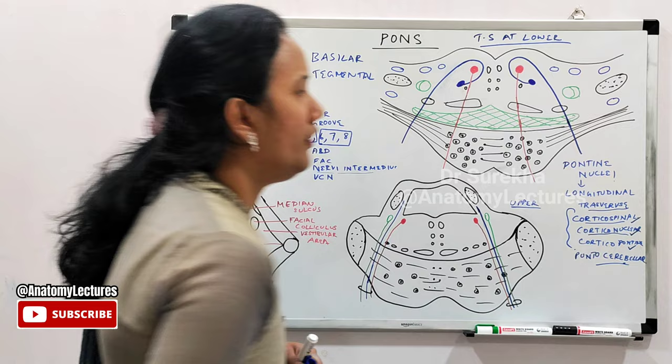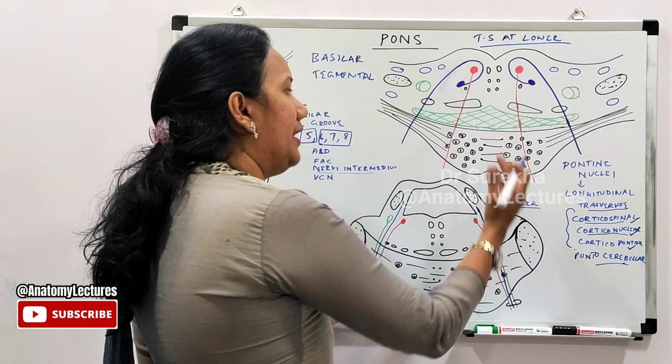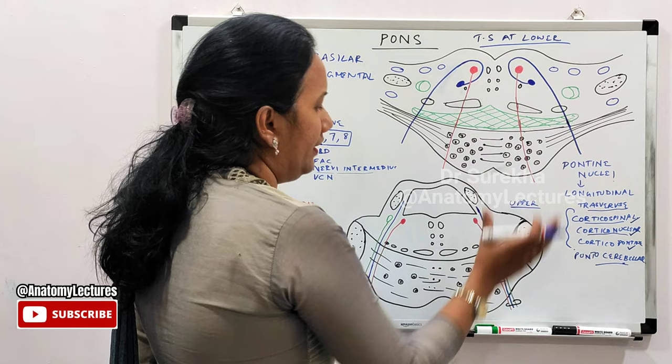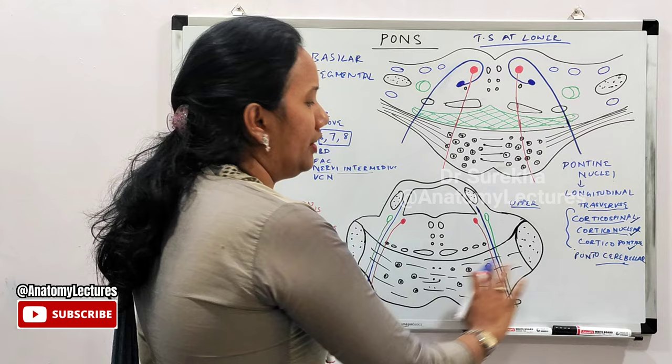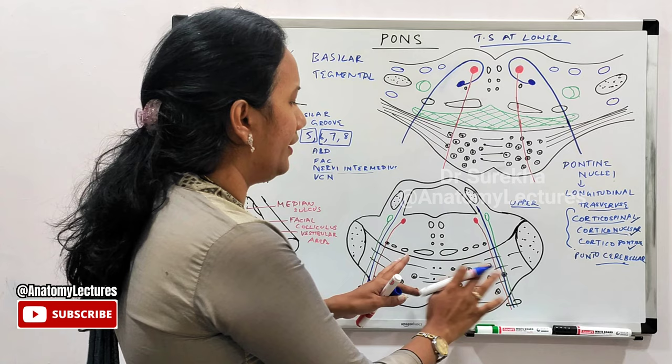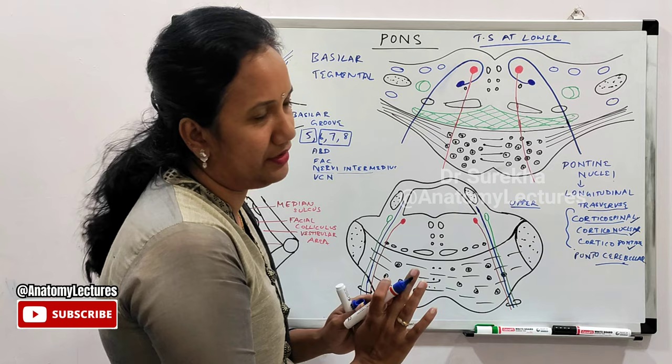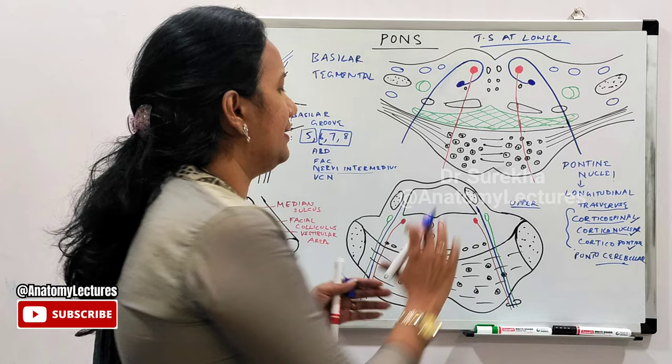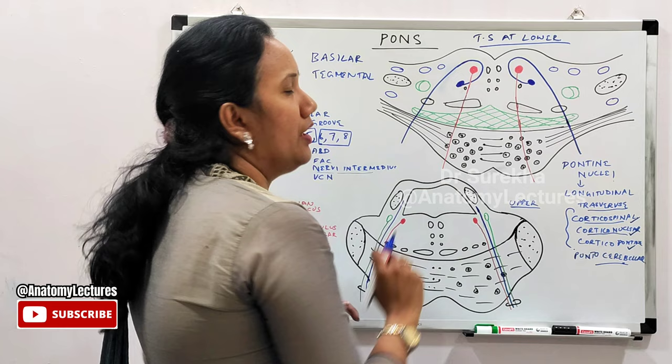The basilar part looks the same whether you take a section at the upper level or lower level — the same pontine nuclei and the same transversely running and longitudinal fibers are present. Whatever differences exist between the two levels are only in the tegmental part, the dorsal part of the pons.